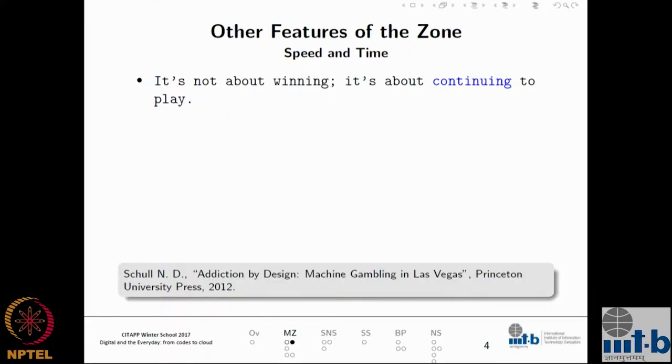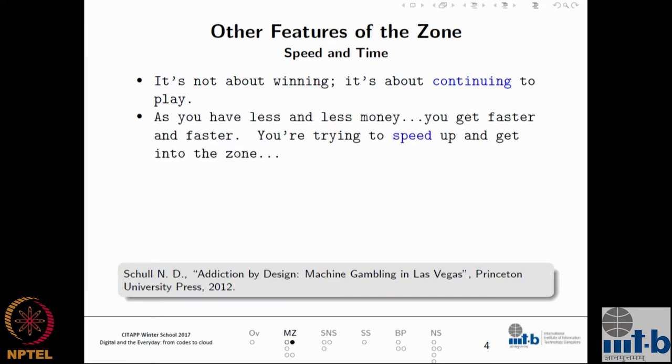There are other features of the machine zone related to the technological aspects of these gambling machines. One feature is: it's not about winning, but about continuing to play — they don't care whether they've made money, they just want to keep playing. Another feature: as you have less and less money, you get faster and faster, only trying to speed up and get into the zone. People want to get into this zone very quickly — feel lost, cocoon themselves with the machine.